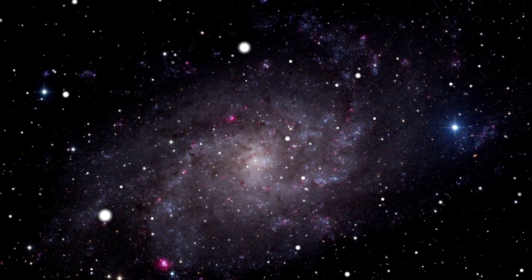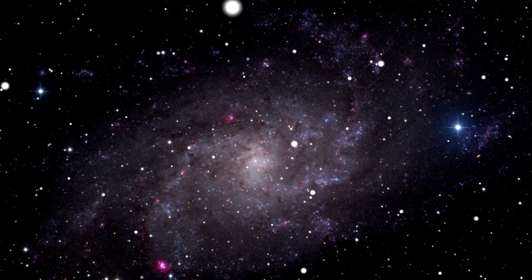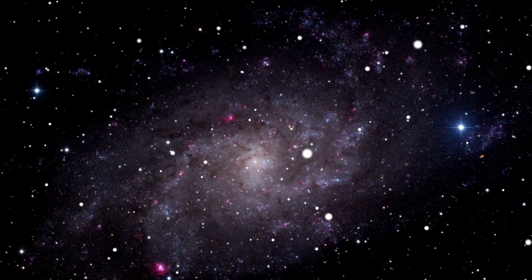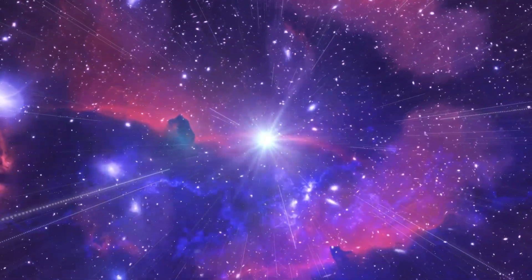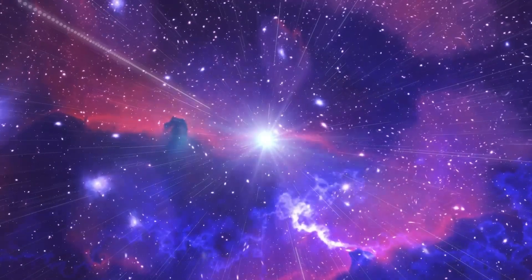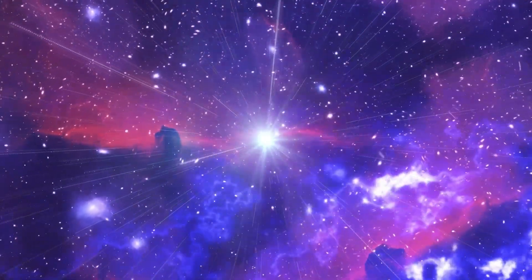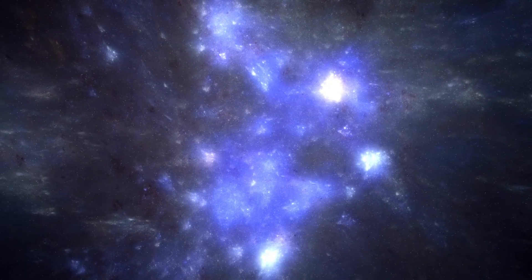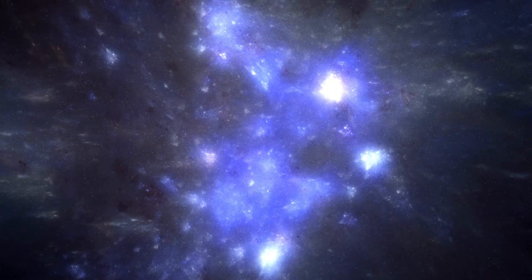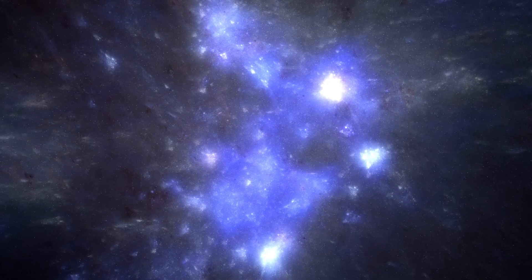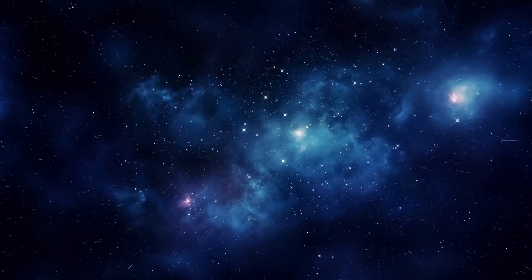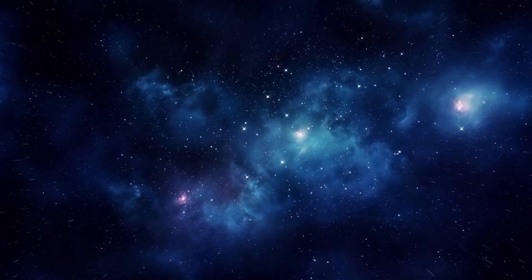What the JWST saw at the end of the observable universe wasn't just a few faint specks of light, it was the formation of the very first galaxies, possibly even some of the first stars known as Population III stars. These stars, made entirely of hydrogen and helium, are thought to have been massive and short-lived, burning through their nuclear fuel quickly before exploding in supernovae that seeded the cosmos with heavier elements necessary for the formation of planets, life, and everything we know today.